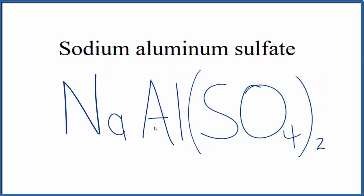So this is the formula for sodium aluminum sulfate: NaAl(SO4)2. We have two of these sulfate ions with the sodium and aluminum.